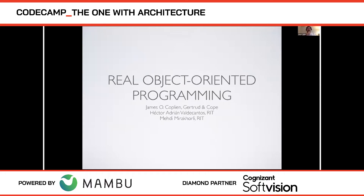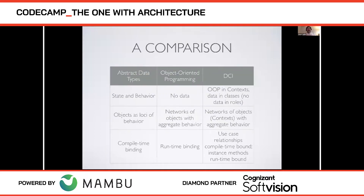Looking at object-oriented programming, he and I agree that we've really lost Alan Kay's vision — what we call object-oriented programming today is really just data abstraction. Abstract data types and object-oriented programming are really two different things, but in the modern world most people equate them, and very few differentiate them.